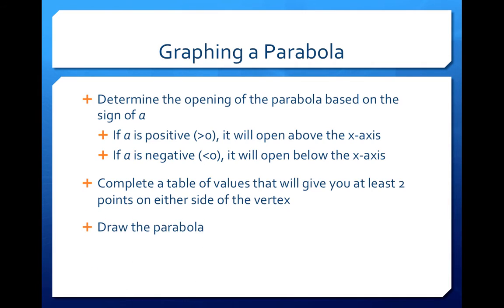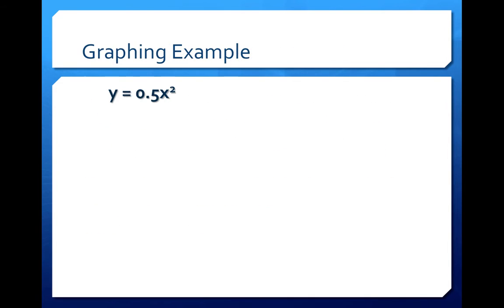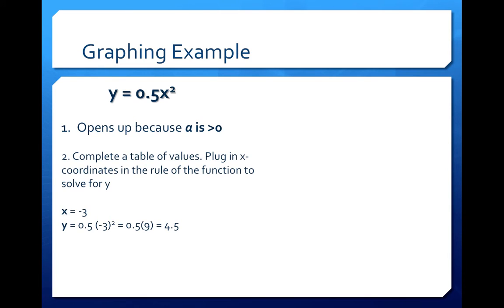And finally, draw. So here's an example. I give you the rule y equals 0.5x squared. Notice the a. Well, the a, first of all, is greater than 0, so it must open up on top of the x-axis. And it's also close to 0, so assume that it's going to be a big opening.